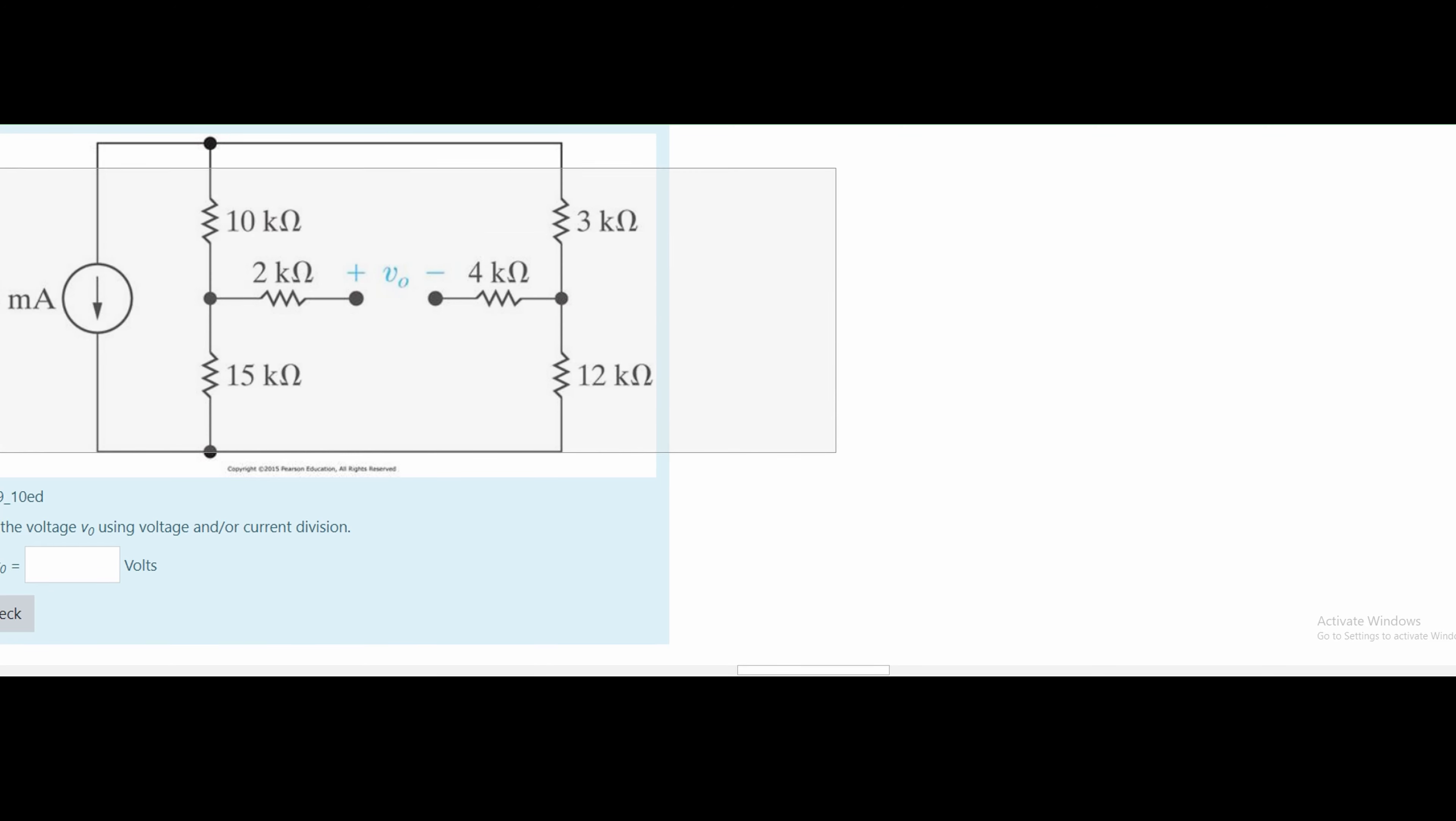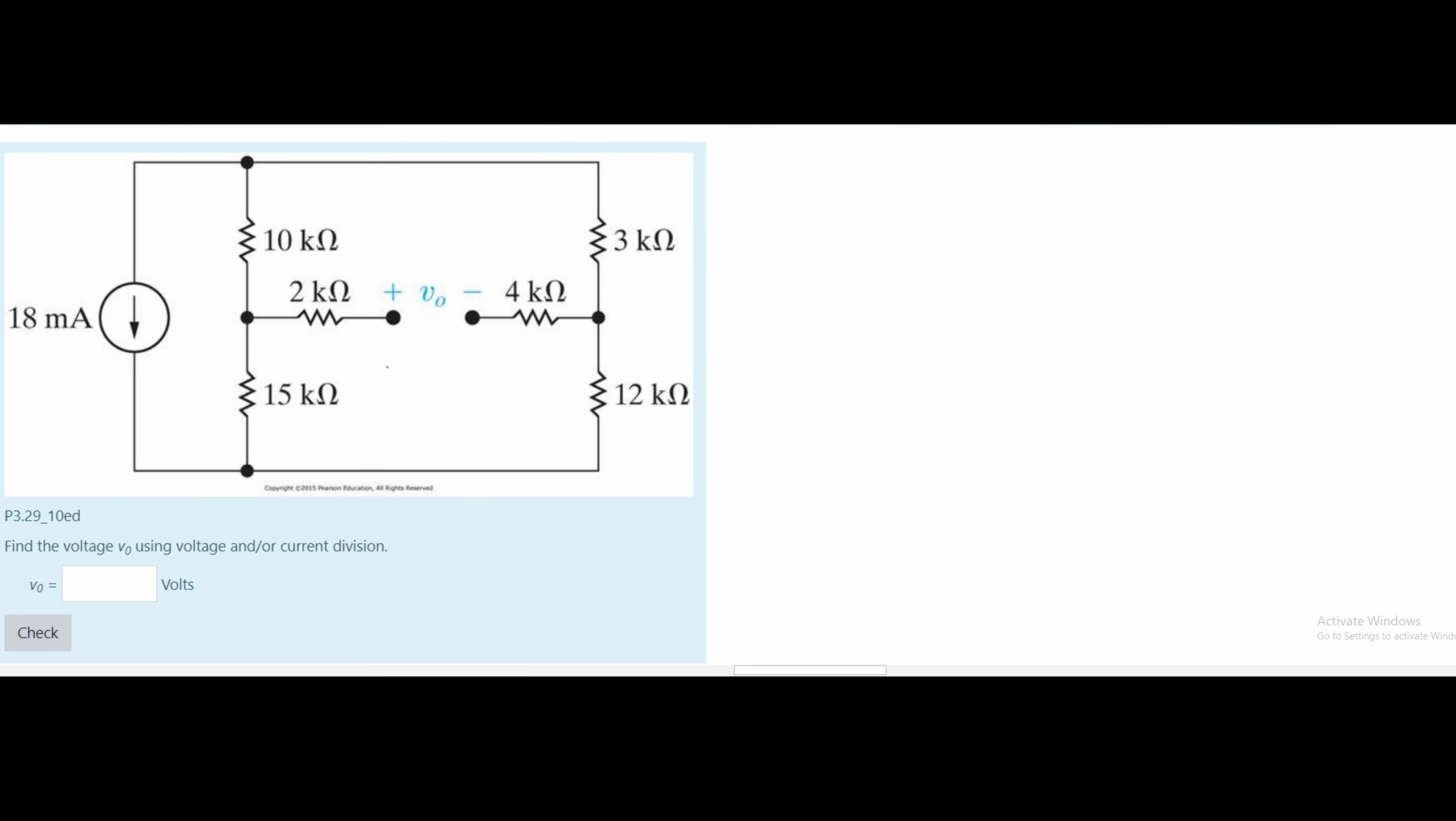In this problem, we are given a complex circuit diagram with a voltage that jumps from these two nodes. We are asked to find the voltage V0 using voltage and or current division.